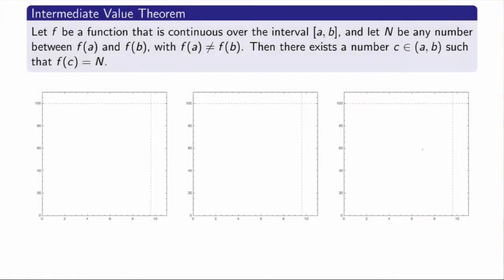Let's now formalize this mathematically. Here's the formal statement of the Intermediate Value Theorem: Let f be a function that is continuous over a closed interval a to b, and let capital N be any number between f of a and f of b. Then there must exist a number c between a and b such that f of c — the value of the function — is exactly equal to capital N.